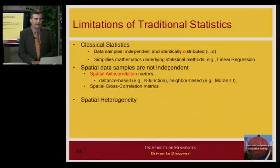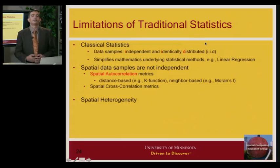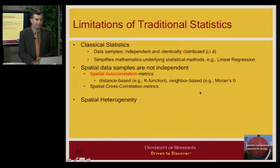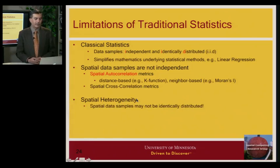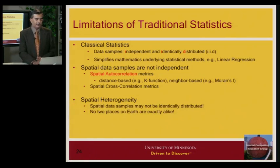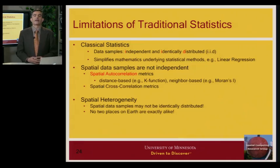Even the second I — the identical distribution — is also challenged in geography. This is basically captured in terms of spatial heterogeneity. You may have heard sayings like 'no two places on earth are exactly alike,' which essentially says that the earth varies from place to place.